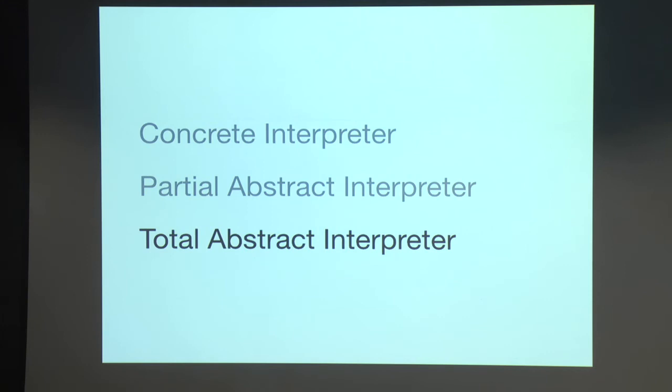The problem with this interpreter is that it doesn't terminate. So if we write a trivial loop, it's going to run forever. There's nothing stopping it. So that's all there is to writing a partial abstract interpreter. And most of those tricks comes from the AAM framework.